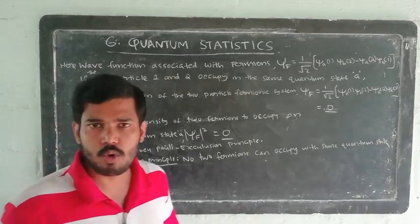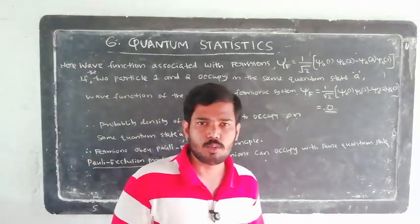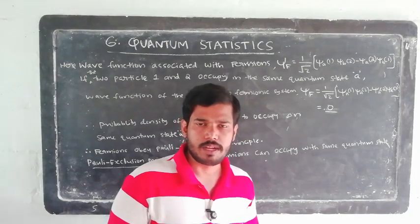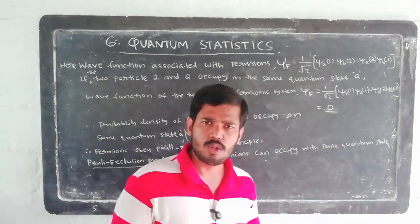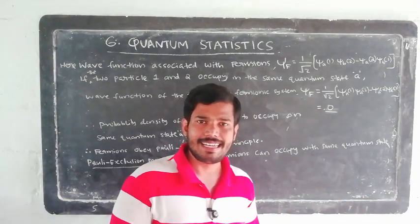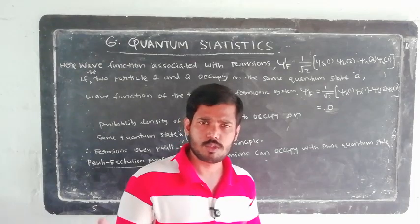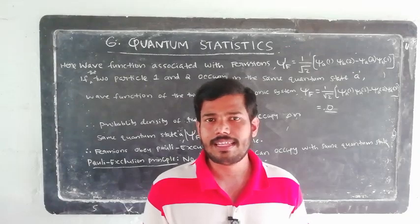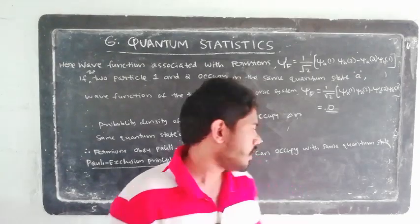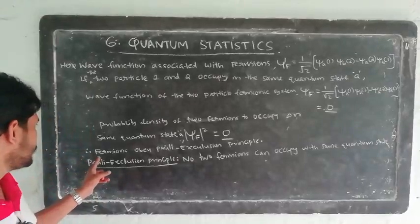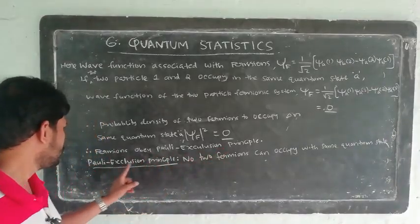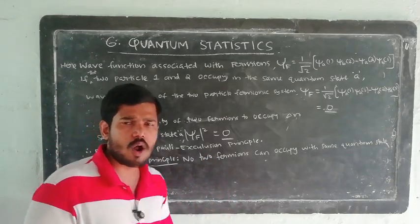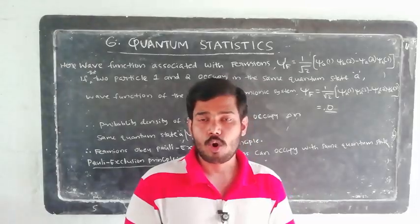Therefore the probability density psi_f squared equals zero. The two fermions cannot occupy the same quantum state — the Pauli exclusion principle is satisfied. Fermions, which include electrons, protons, and neutrons, obey the Pauli exclusion principle: no two fermions can occupy the same quantum state. One quantum state can be occupied by only one fermion.